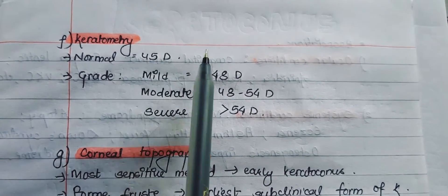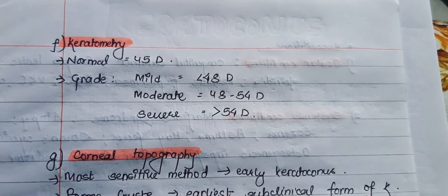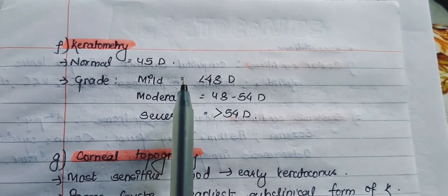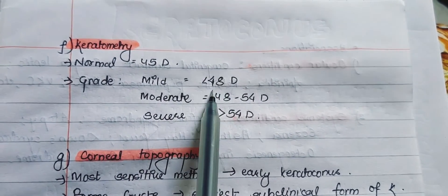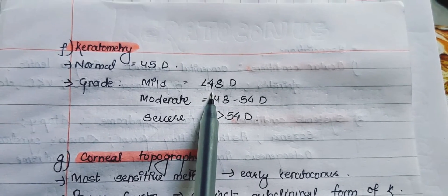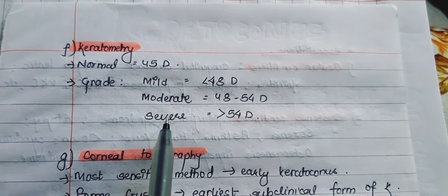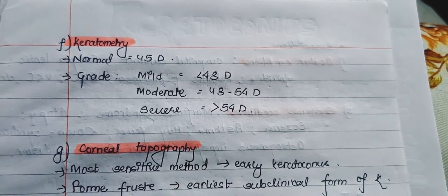Keratometry is done to find the grade of keratoconus. The normal keratometric value is 45 diopters, but in keratoconus the value is increased. It is graded as mild when the keratometric value is less than 48 diopters, moderate when it is 48 to 54 diopters, and severe when the keratometric value is more than 54 diopters.